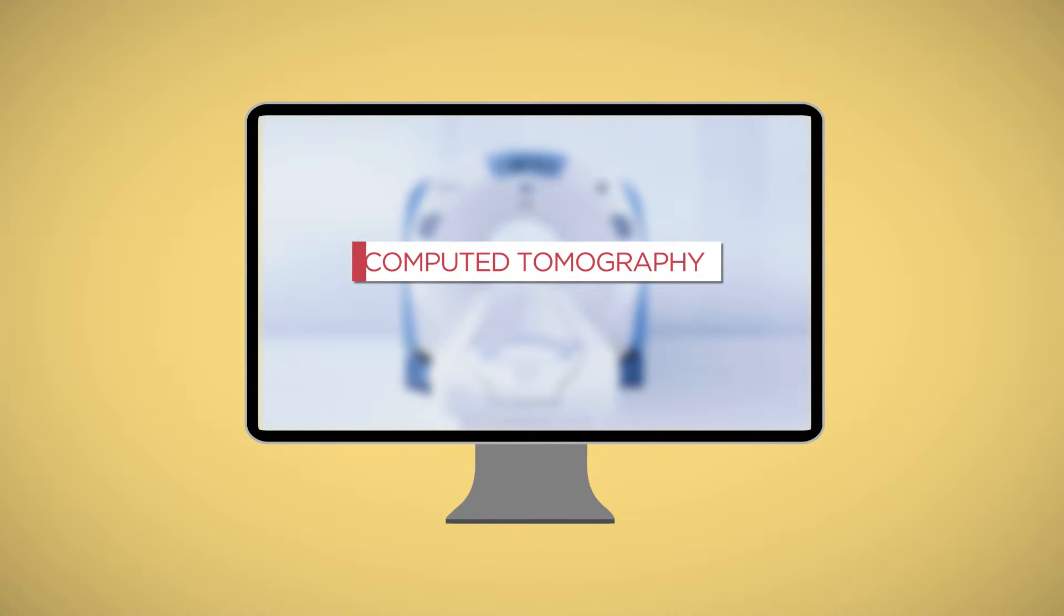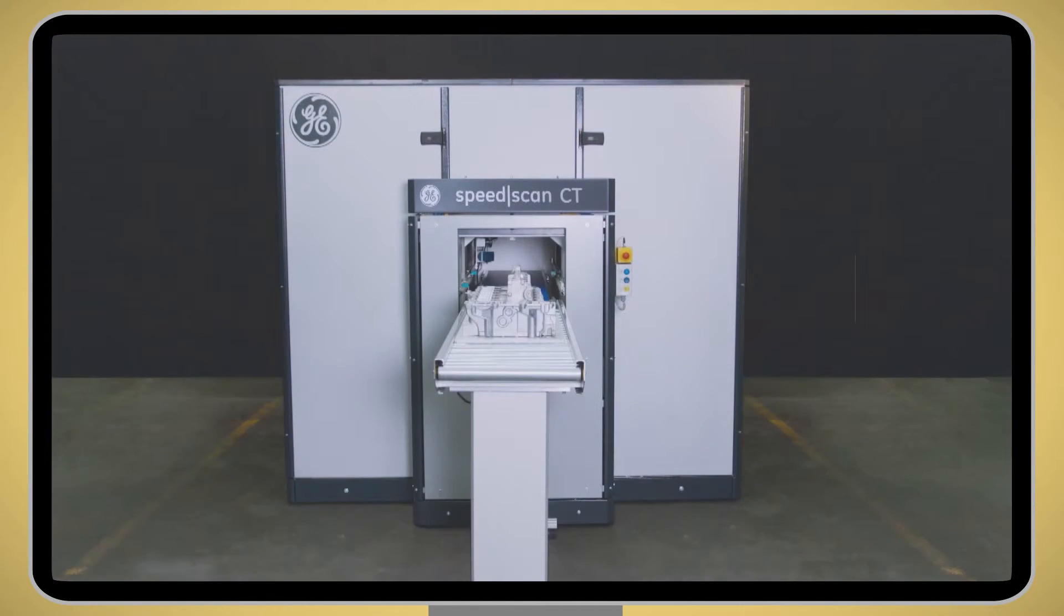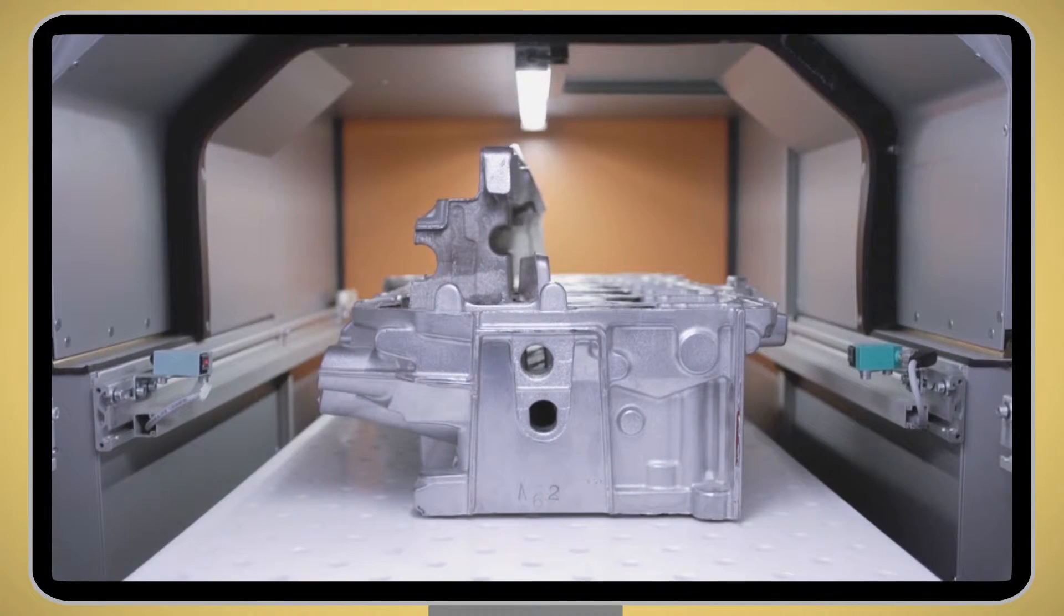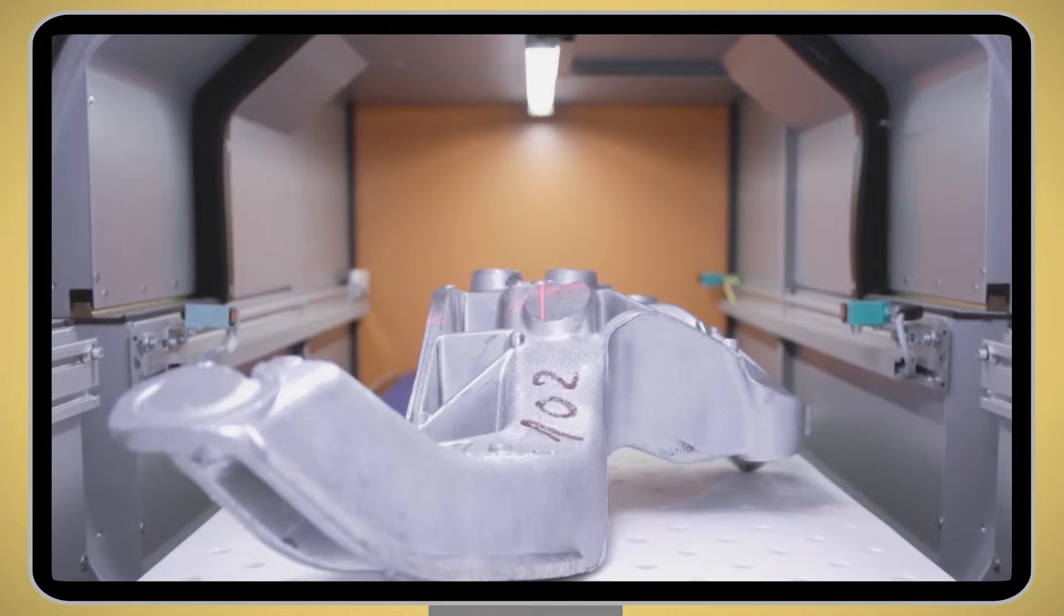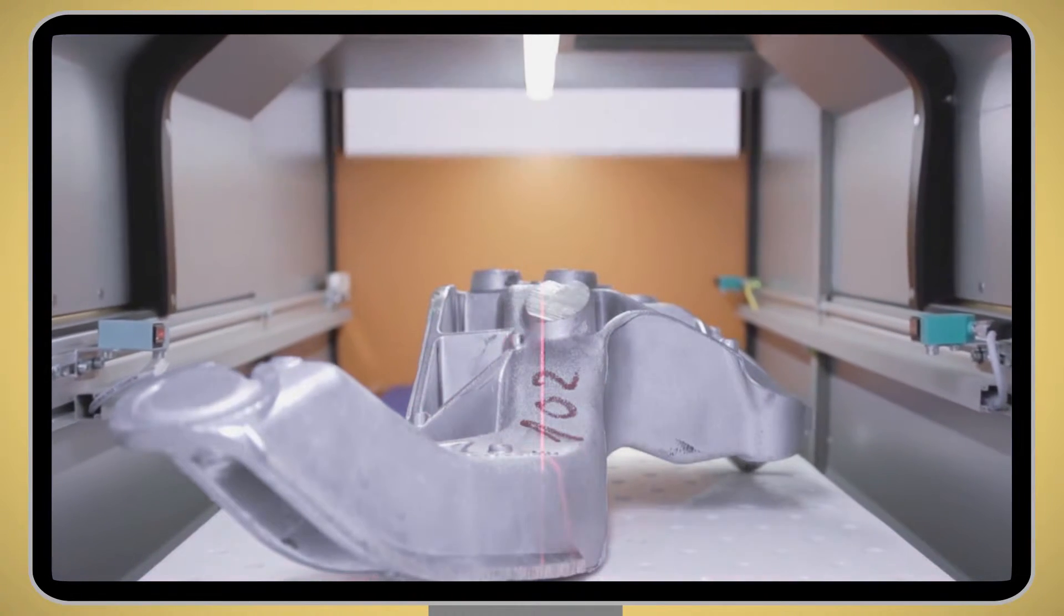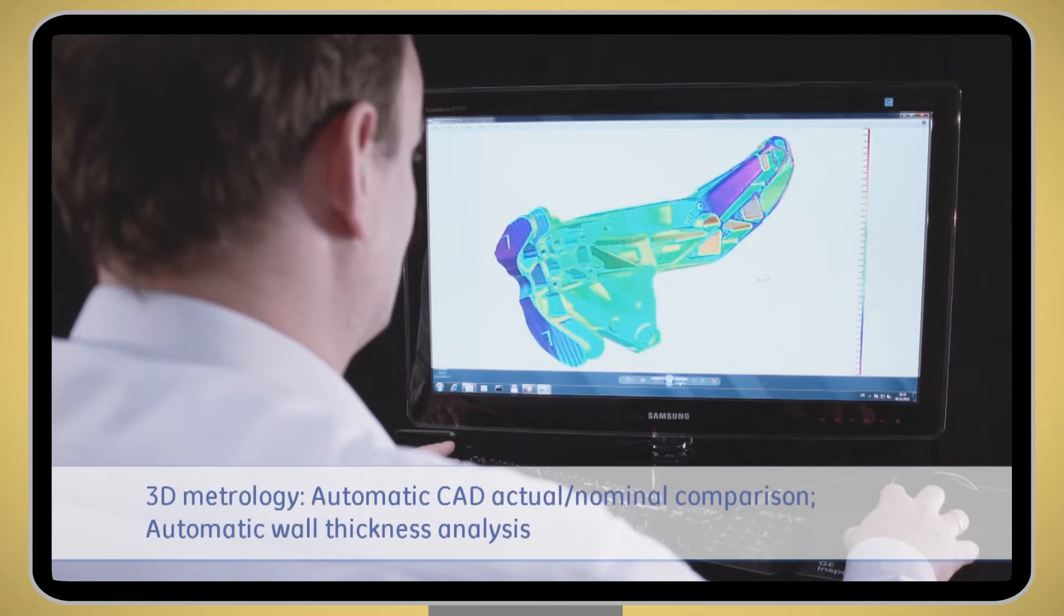Modern NDT methods are those technologies used in the medical world and applied to the industry. Computed tomography can be used to scan mechanical parts, imperfections in the material, shape defects, a missing part in an assembly. It will see everything. And the generated 3D image can even be compared to a CAD model.